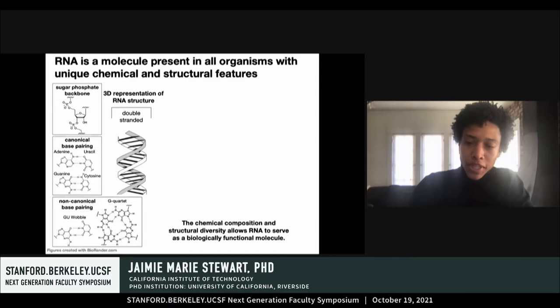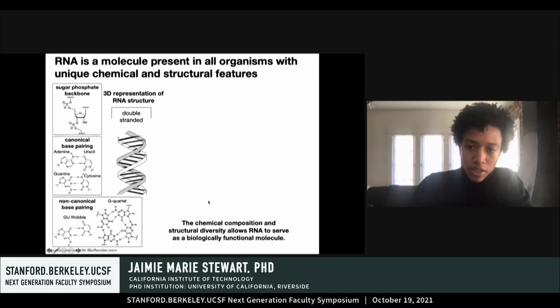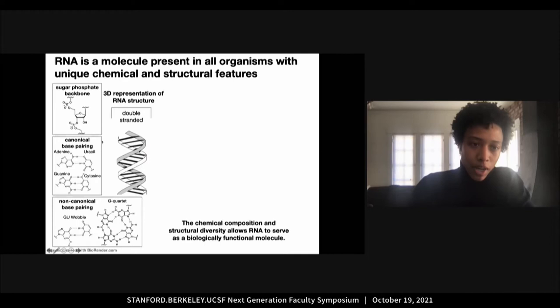If you're familiar with DNA, then you have knowledge of nucleic acid chemistry. Ribonucleic acid, or RNA, is a nucleic acid that is chemically and as a result structurally different from DNA. RNA is a complex molecule, but I'll speak on some of its distinctive features. RNA is typically single-stranded in nature; however, it can also form a double-stranded helix. There's an active hydroxyl group located on the two-prime carbon, as well as the use of uracil as a nitrogen base instead of thymine. RNA can participate in canonical base pairing as well as non-canonical base pairing, such as G-wobble base pairs and the formation of G-quartets through Hoogsteen base pairing.